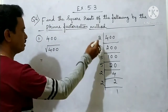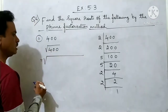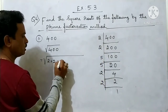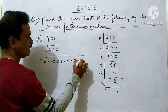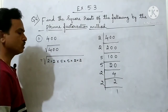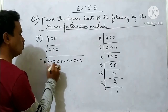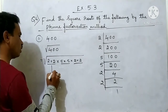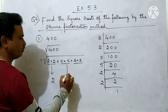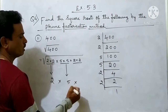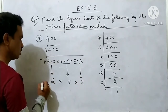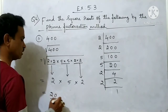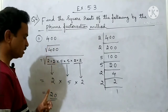Now, what are the factors? We write them as: 2 appears 2 times, then 5 appears 2 times, then 2 appears 2 times again. Make groups: first 2 digits — 1 group; next 5 — 1 group; last 2 — 1 group. From each group take 1 number outside: 2, then 5, then 2. Multiply: 2 fives are 10, 10 twos are 20. So the square root of 400 is 20.